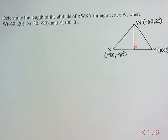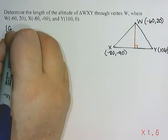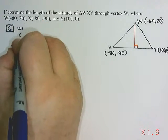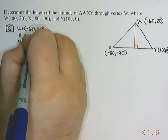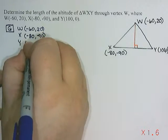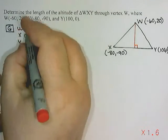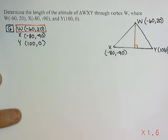So I'm going to start with given. What's given in the question are the three points: W, X, and Y. Because it is passing through W, I'm going to put a little box around that just to remind me which one is actually on the altitude.